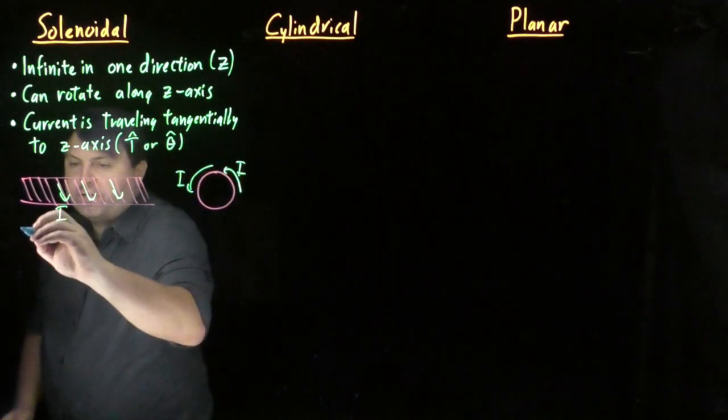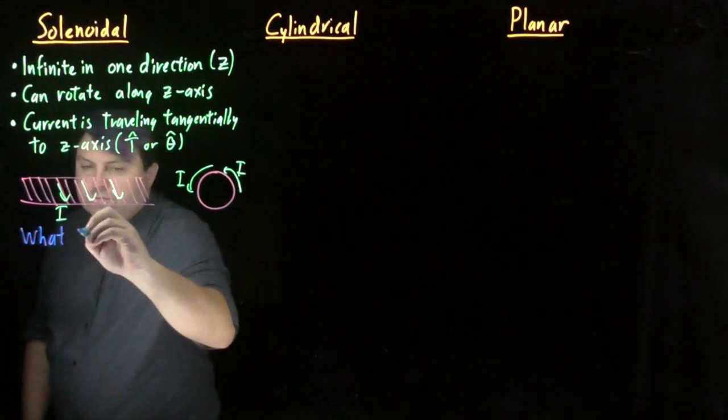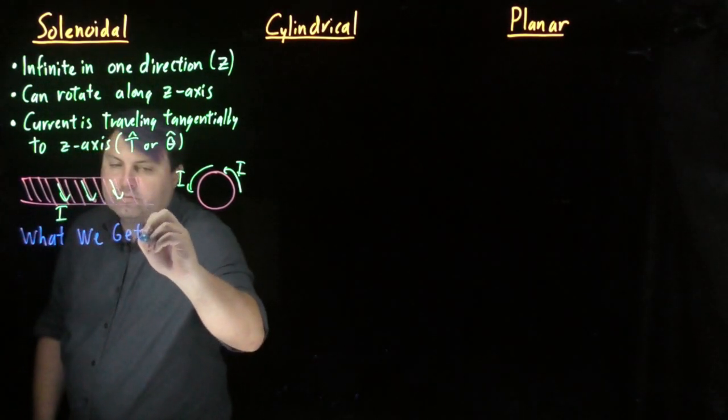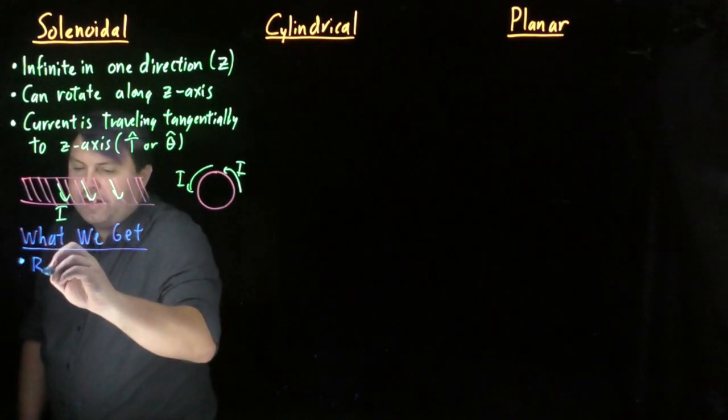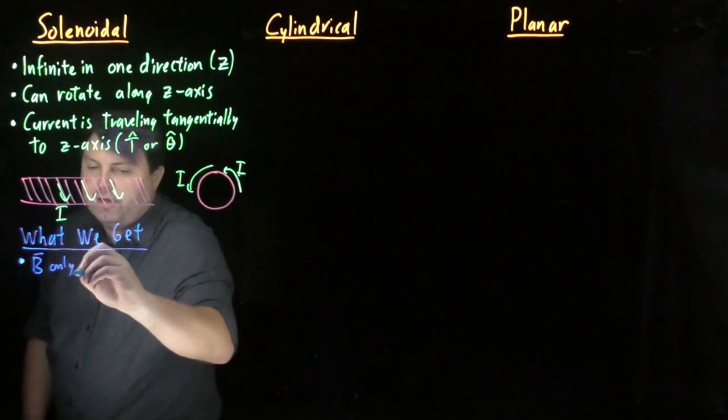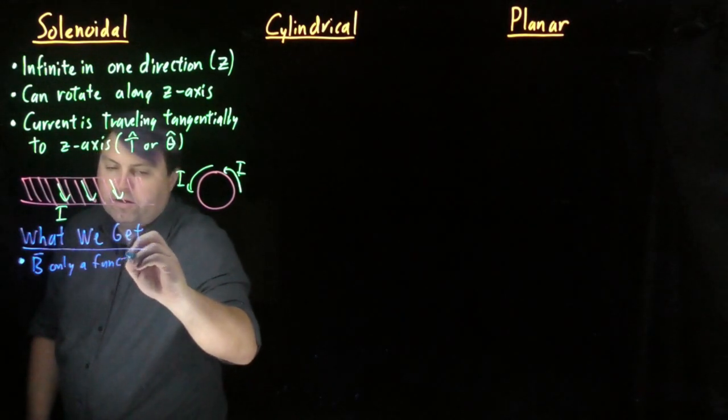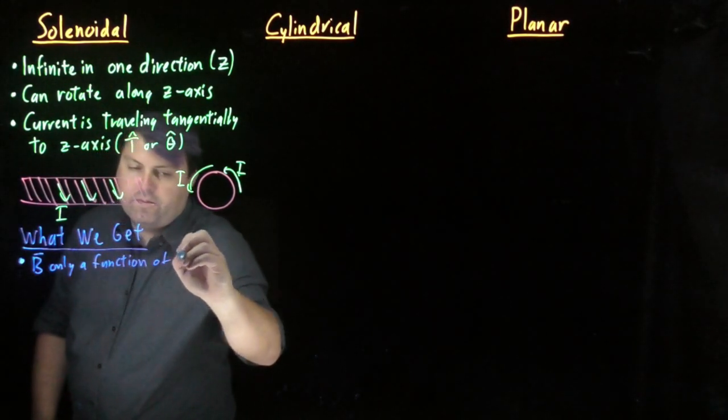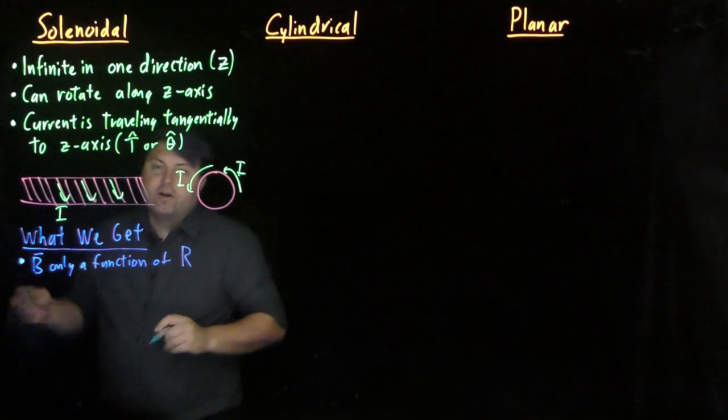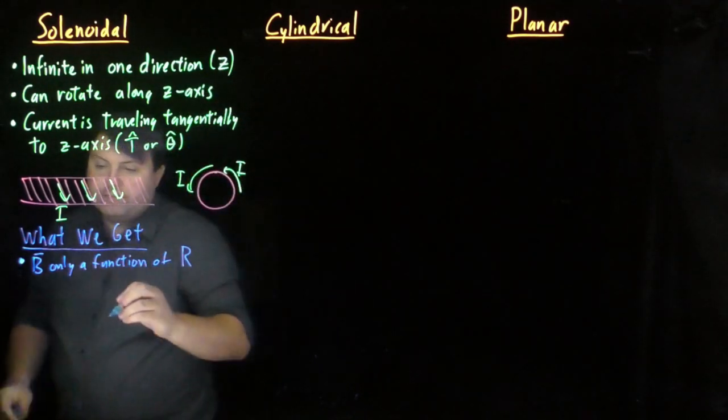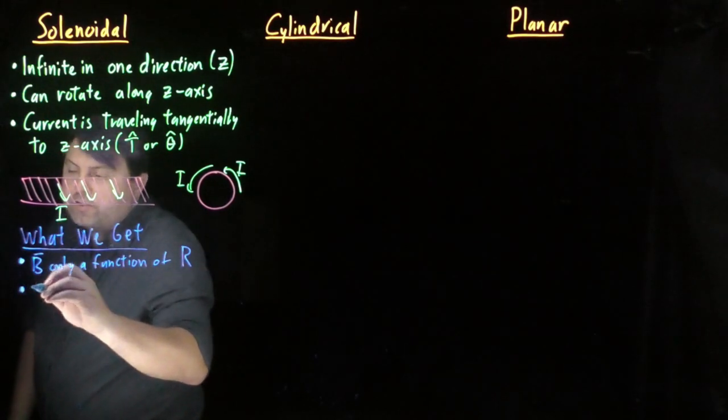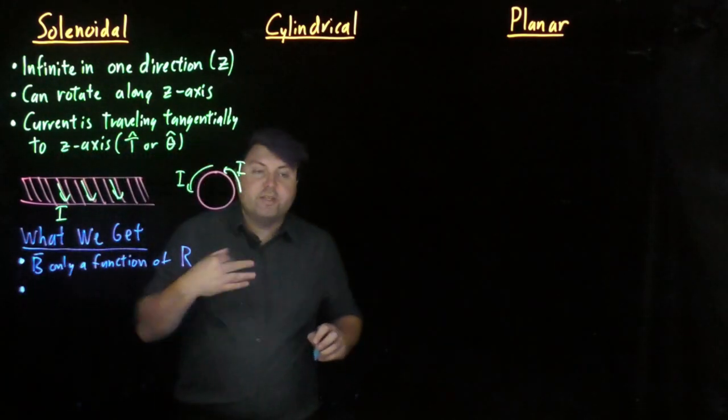So this is an infinite solenoid. What we get from this symmetry is that our magnetic field is only a function of capital R, the two-dimensional radius in the R, T, Z coordinate system. But unlike electric fields, the variable that it depends upon is not going to be the direction.